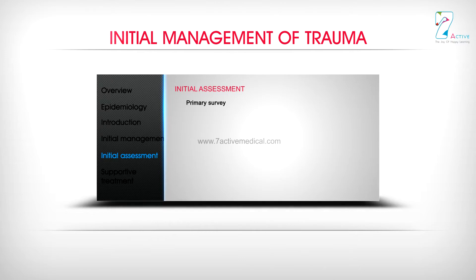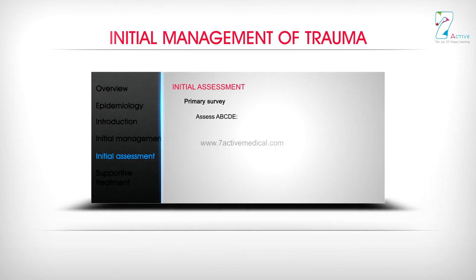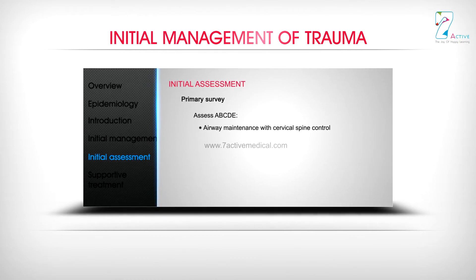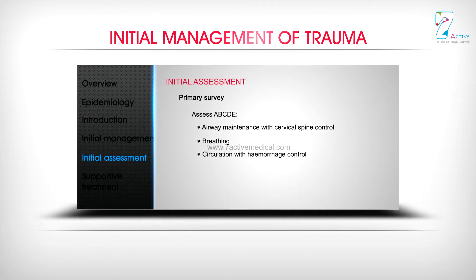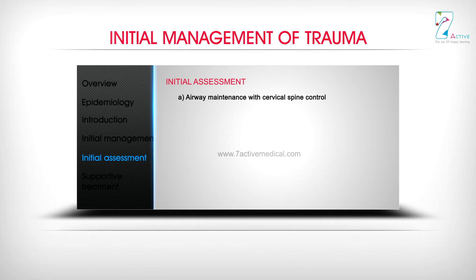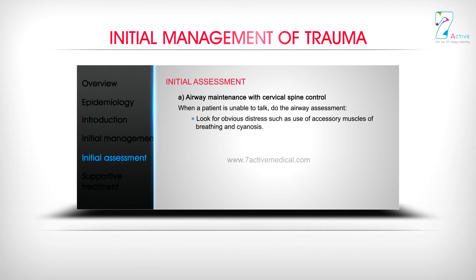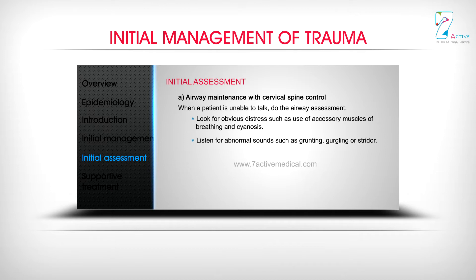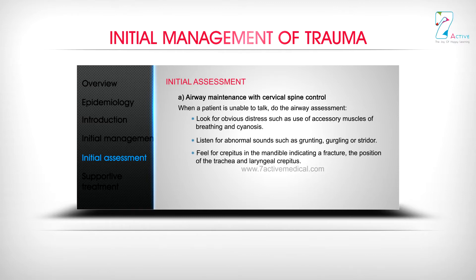The initial assessment begins with the primary survey, assessing ABCDE: Airway maintenance with cervical spine control, Breathing, Circulation with hemorrhage control, Disability, and Exposure and environment control. For airway assessment, when a patient is unable to talk, look for obvious distress such as use of accessory muscles of breathing and cyanosis. Listen for abnormal sounds such as grunting, gurgling, or stridor. Feel for crepitus in the mandible indicating a fracture, the position of the trachea, and laryngeal crepitus.